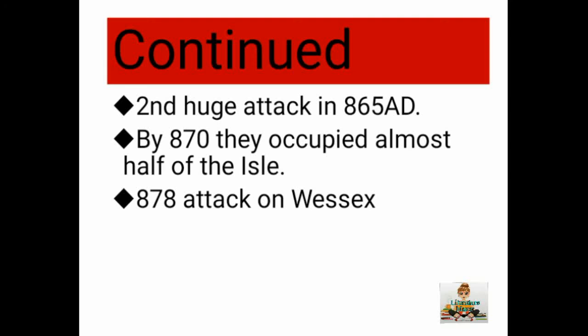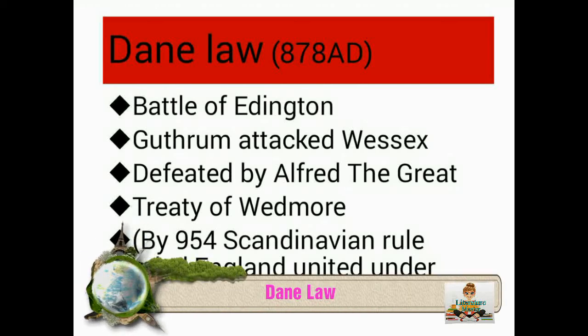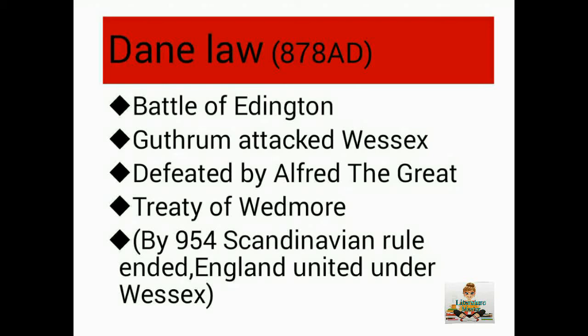By 870, they occupied almost half of England. Ivar the Boneless became the first Viking king of Northumbria. In the third stage, King Guthrum of Denmark made nine attacks on Wessex in 878. At the end, he was defeated by Alfred the Great at the Battle of Edington. According to the Anglo-Saxon Chronicle, Guthrum's army negotiated a peace treaty — the defeated army promised to leave Alfred's kingdom, and their king Guthrum would receive baptism. Three weeks later, Guthrum came to Alfred the Great and received baptism, converting to Christianity. The Treaty of Wedmore was signed between both parties, dividing the lands of Alfred and Guthrum. In 884, Guthrum attacked Wessex again, ending the Wedmore Treaty.